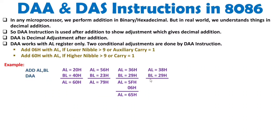Another example: 38H plus 29H. 8 plus 9 equals 17; 17 minus 16 gives 1 in the lower nibble with a carry, making the intermediate result 61H with auxiliary carry set. Both nibbles are less than 9, but auxiliary carry is set, so we add 06H. 1 plus 6 equals 7 in the lower nibble, and the upper nibble remains 6, giving 67H. Indeed, 38 plus 29 equals 67 in decimal — that is what DAA achieves.